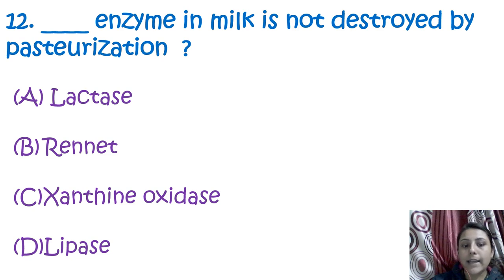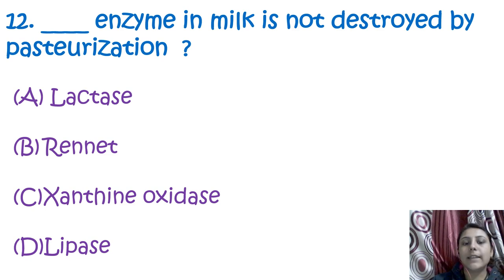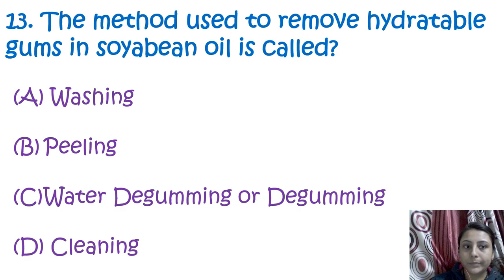Lactose, rennet, and lipase are enzymes that can be destroyed during pasteurization, but xanthine oxidase is the answer to this question — it is not destroyed by pasteurization.